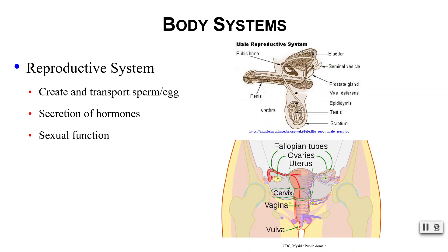And that concludes our introduction to anatomy and physiology: common characteristics of living organisms, levels of organization in the body, and an overview of the body's systems.